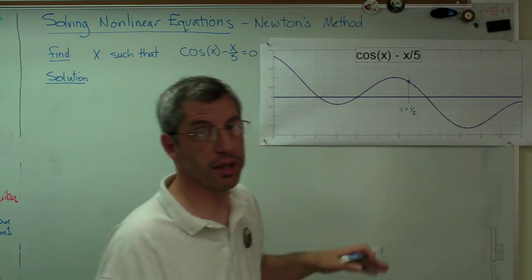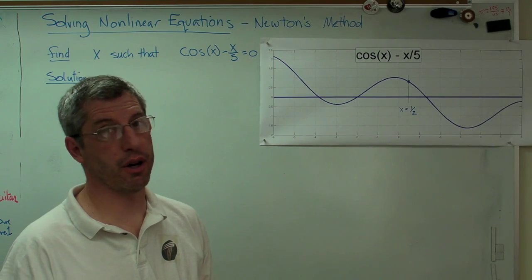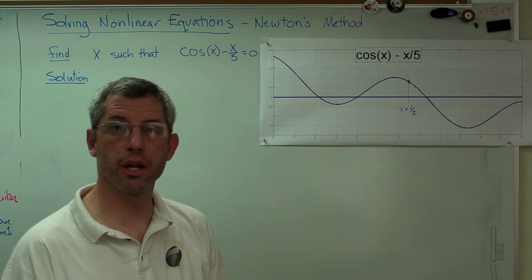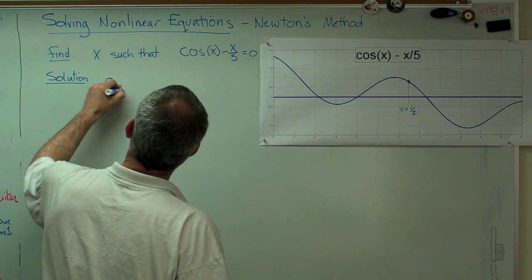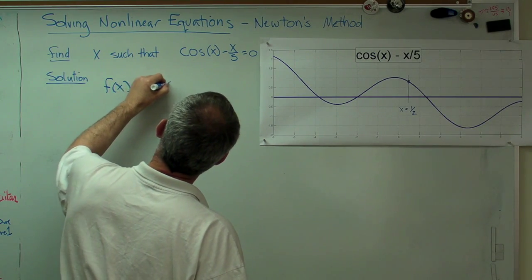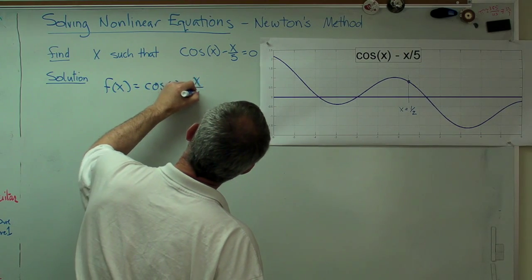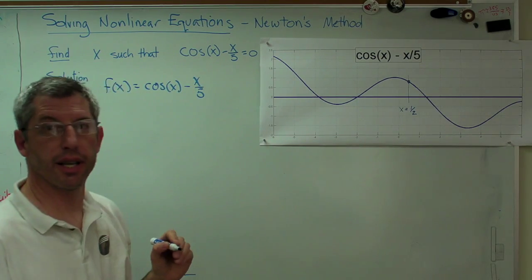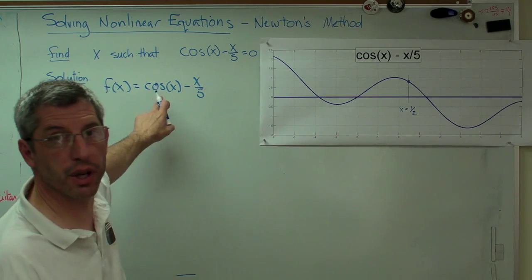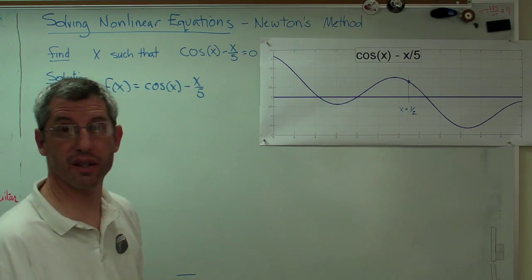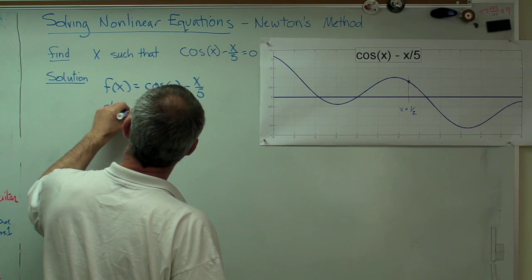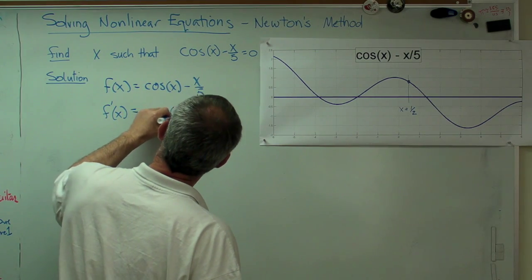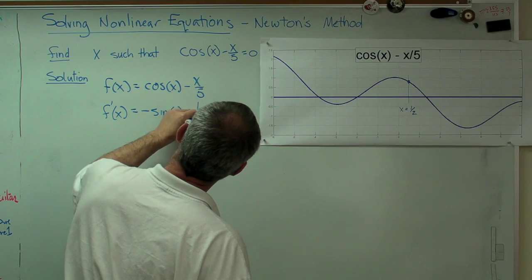Now we need a tangent line. As soon as you think of tangent you ought to be thinking derivative and we are going to need a derivative. So let's write that out. If f of x equals cosine x minus x over 5, now remember the derivative of cosine is negative sine and the derivative of x is just 1. So f prime which is the derivative is minus sine x minus 1 over 5.